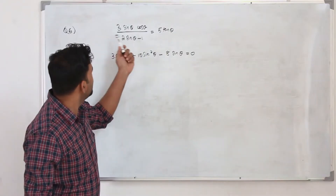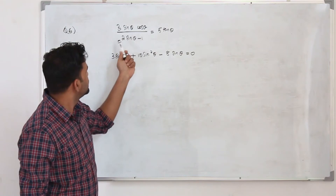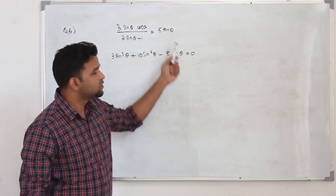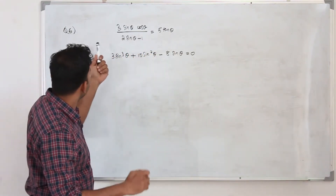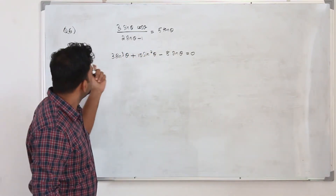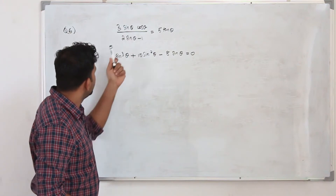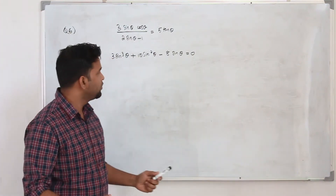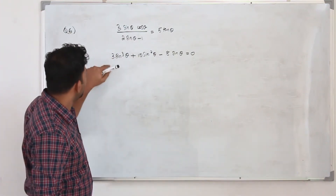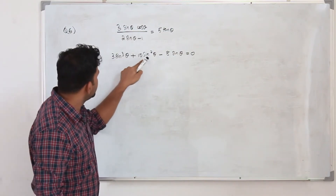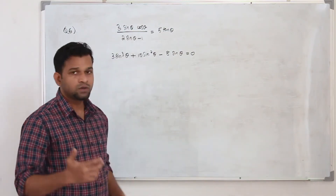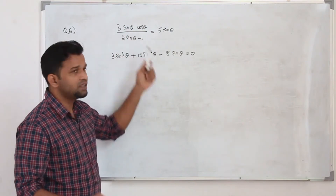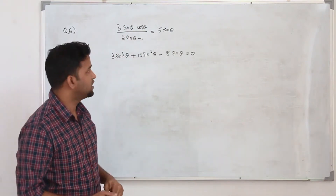We are given the expression 3 sin θ cos θ divided by (2 sin θ − 1) equals 5 tan θ, and they want you to prove this can be rewritten in that form. When you look at it, all the trigonometric ratios in the target form are sin θ, which tells us we need to convert everything to sin θ.